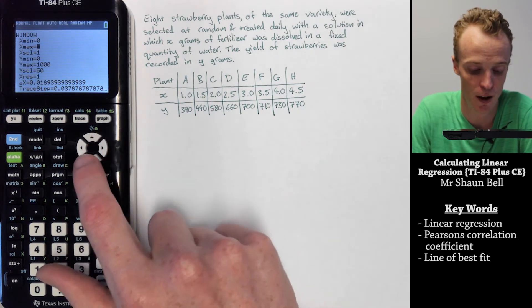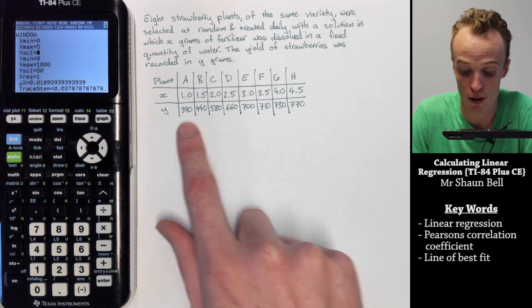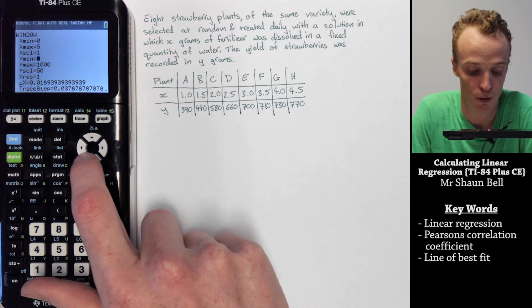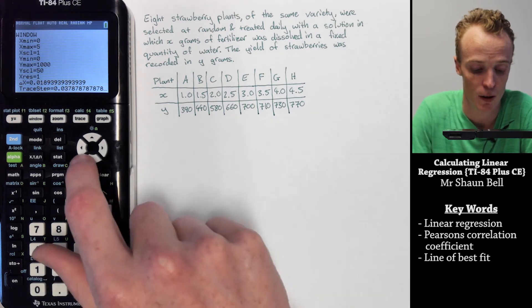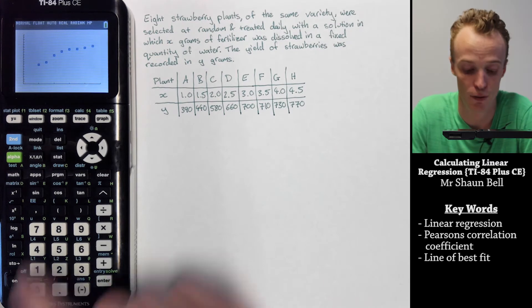For my y values, they range from 390 all the way through to 770. So I decided to graph it from 0 through to 1000 with a scale of 50. And that is how I've produced this graph here.